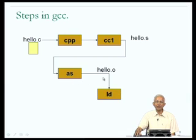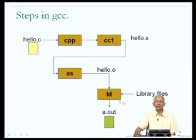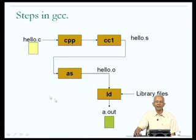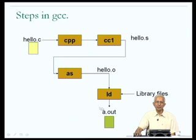AS generates a temporary file called hello.o, which is used as the input to the next step, called LD. LD may take some additional files from a library and merge hello.o along with the library files to generate the a.out executable object file. We were looking at this entire collection of four steps as one box labeled GCC. In this slide, we understand that there are a few steps which take place in between, and that if we ask GCC to show us the temporary files, we may get a little more insight into what is happening in terms of the translation of our program.